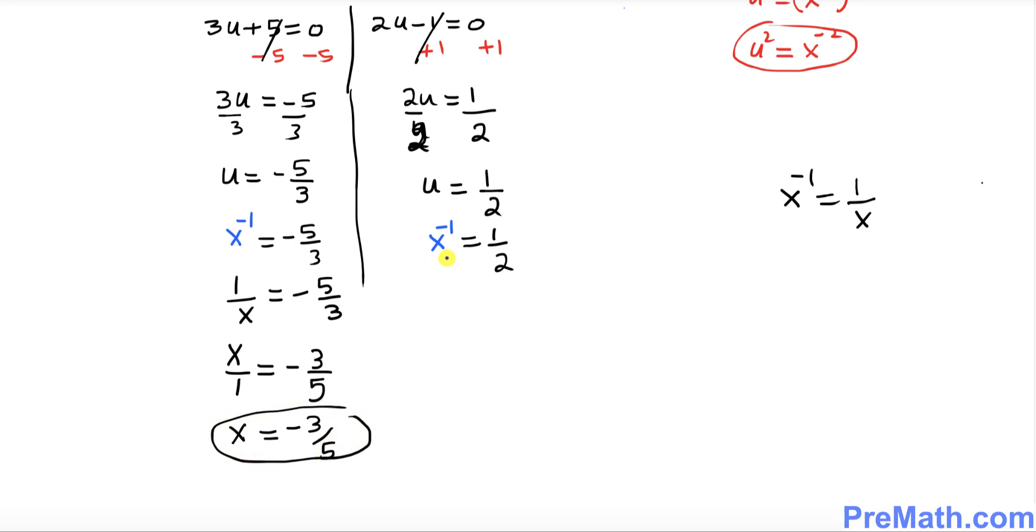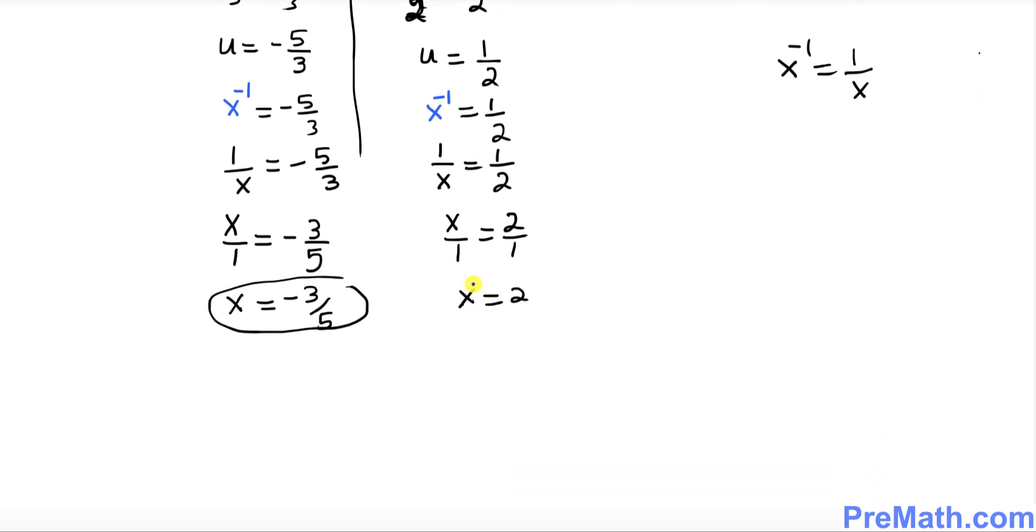And now I want you to do the same thing as we did on the left hand side. x power negative 1 could be written as 1 over x equals 1 over 2. Let's flip it over again, so this becomes x over 1, and you flip it over this side as well, 2 over 1. So this is same as x equal to 2, our other solution.